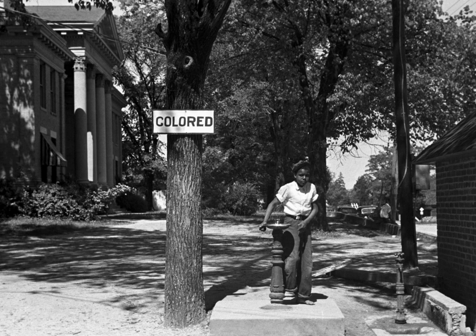These include age, color, convictions for which a pardon has been granted or a record suspended, height, disability, ethnicity, family status, gender identity, genetic characteristics, marital status, nationality, race, religion, sex, and sexual orientation.